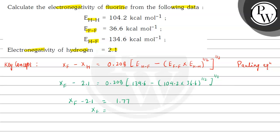Hence, electronegativity of fluorine is 2.1 plus 1.77 which equals 3.87. That means the electronegativity of fluorine in this case is 3.87. I hope you understood the explanation. All the best.